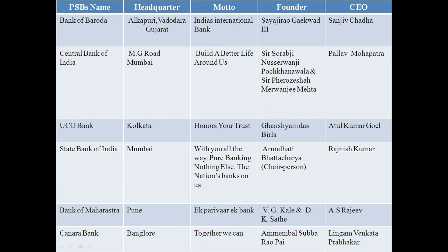Pallav Mohapatra started their career as a Probationary Officer in 1983 from State Bank of India. Our third bank is UCO Bank, i.e. United Commercial Bank. This was established in 1943 and its head office is in Kolkata. The company's current CEO is Atul Kumar Goyal Ji, who is also Managing Director and Executive Director. The main motto and tagline is 'Honors Your Trust.'